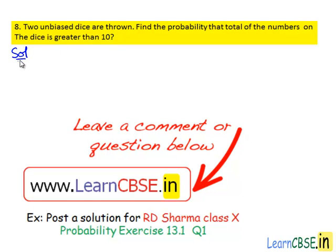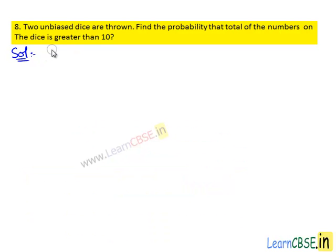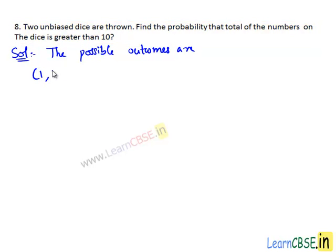Moving on to the solution, two unbiased dice are thrown. Then the possible outcomes are (1,1) - that means on the first die 1 comes up and on the second die again 1 comes up. (1,2) - that means on the first die 1 comes up and on the second die 2 comes up like this. Like this we have (1,3), (1,4), (1,5) and (1,6).